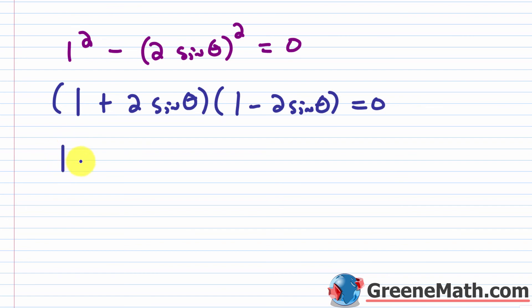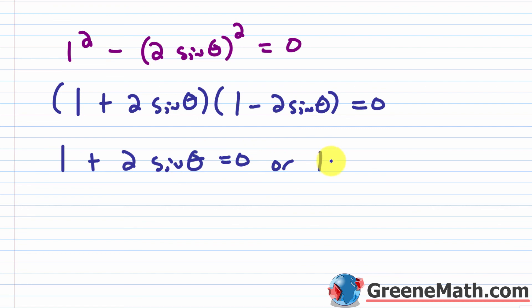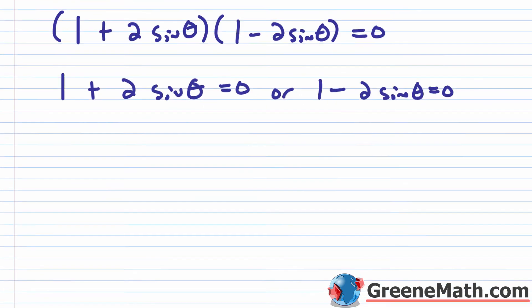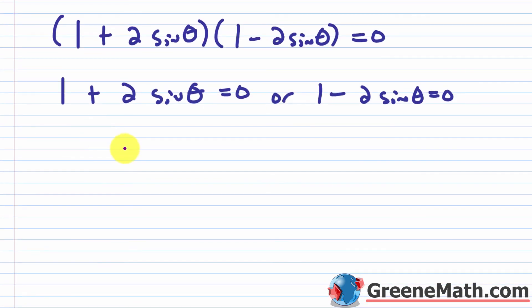Factoring as a difference of squares: (1 + 2 sine theta)(1 minus 2 sine theta) = 0. Setting each factor equal to zero: 1 plus 2 sine theta equals 0, or 1 minus 2 sine theta equals 0. Both are straightforward to solve.